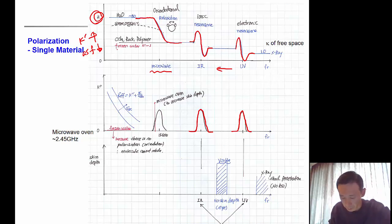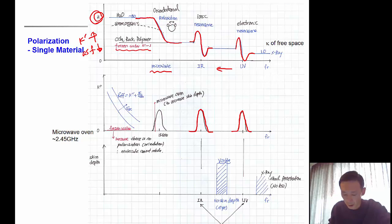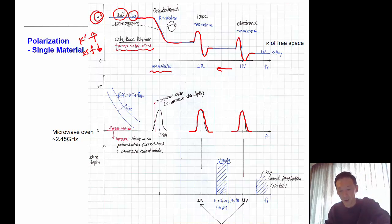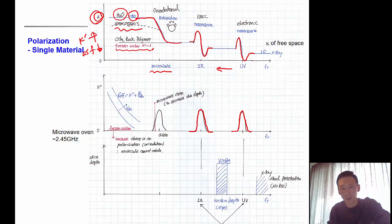For frozen water, the water molecules are bounded and locked up by neighboring molecules, so it does not show any orientational polarization — kappa-prime is around 3. Rock is similar, and non-polar polymers are around 3 to 4. But because water is a highly polar molecule, it shows orientational polarization to a greater extent, so the real permittivity kappa-prime is around 70 to 80. Some polar organic fluids like benzene or toluene also show some polarizability, around 15 to 30.